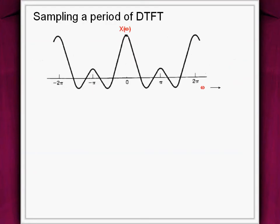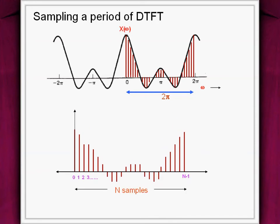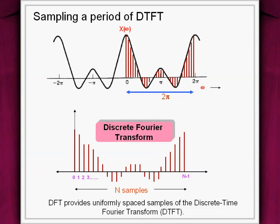The next step is to make this DTFT spectrum discrete by sampling it. Uniformly sampling one period of DTFT into N samples. The sampled DTFT is called the discrete Fourier transform.